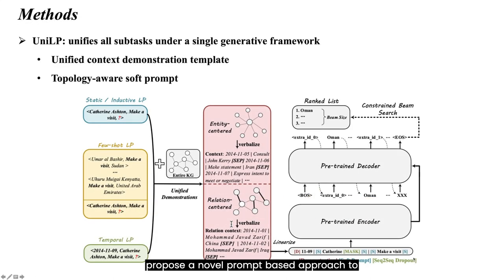We propose a novel prompt-based approach to link prediction, UniLP, which unifies all subtasks under a single generative framework. By introducing a context demonstration template that encodes various context structures into a uniform representation, UniLP achieves a unified solution without the need for dedicated architectures or extensive changes in the model structure.